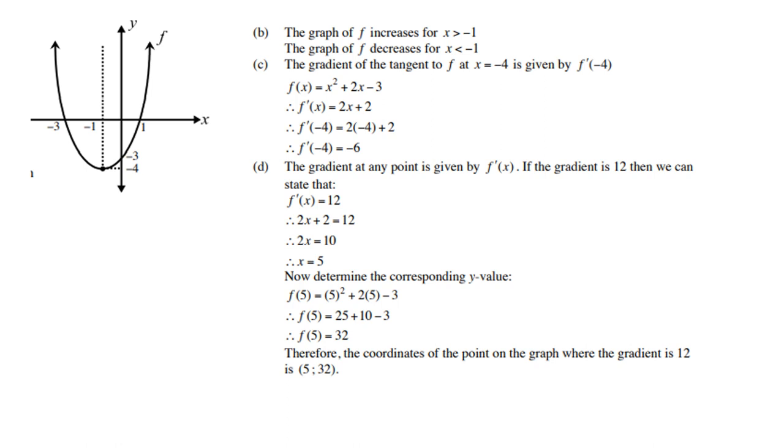The gradient at any point is given by the derivative f'(x). If the gradient is 12, then f'(x) = 12. Differentiate and let it equal 12, therefore x = 5. Now determine the corresponding y value: substitute 5 into the original function. Therefore, the coordinates of the point on the graph where the gradient is 12 is (5, -32).